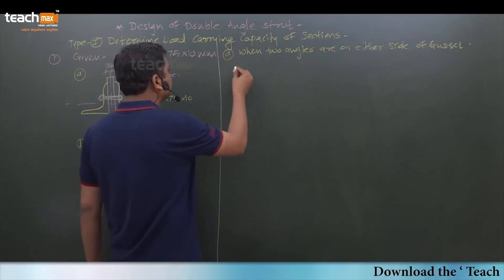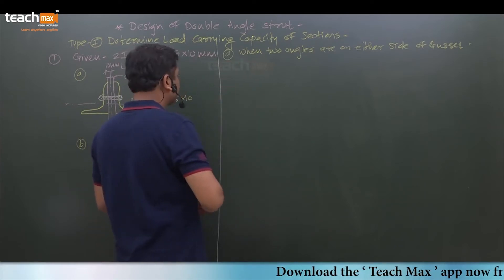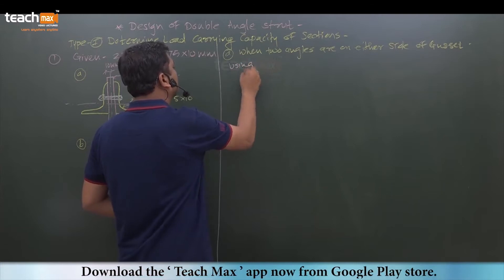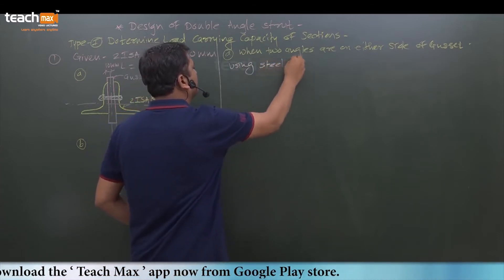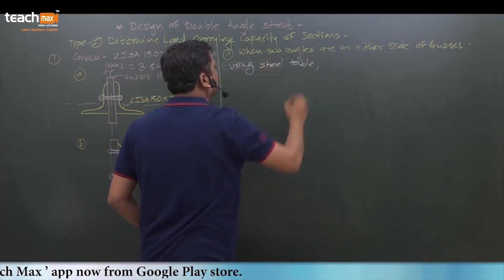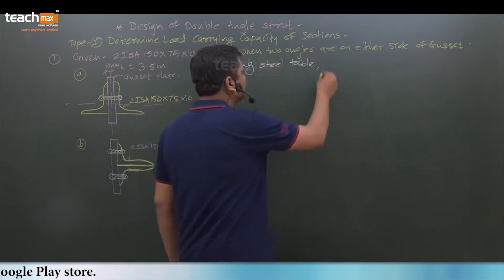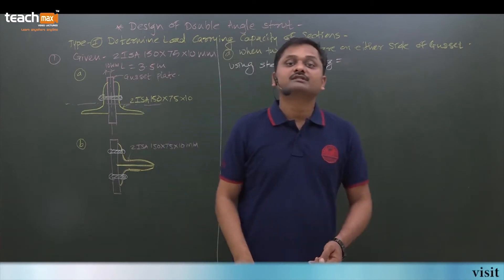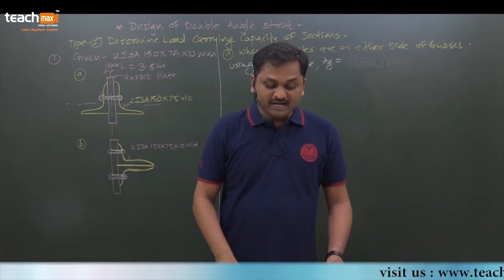So this is the case for which we are going to find out load carrying capacity of the section. First of all, properties of the section we will find out. So using steel table, we will get the property of these sections.